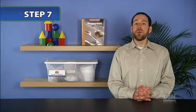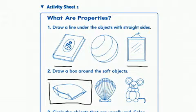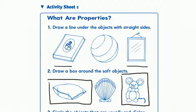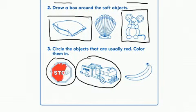Finally, distribute a copy of activity sheet one and a red crayon to each student and help them read and answer the questions on the sheet as needed. Once students have finished their activity sheets, make sure to go over their responses.